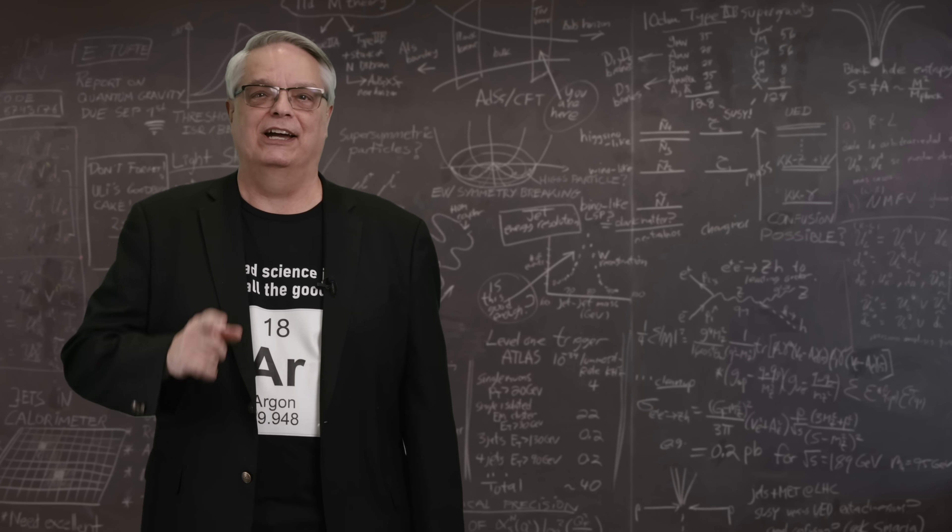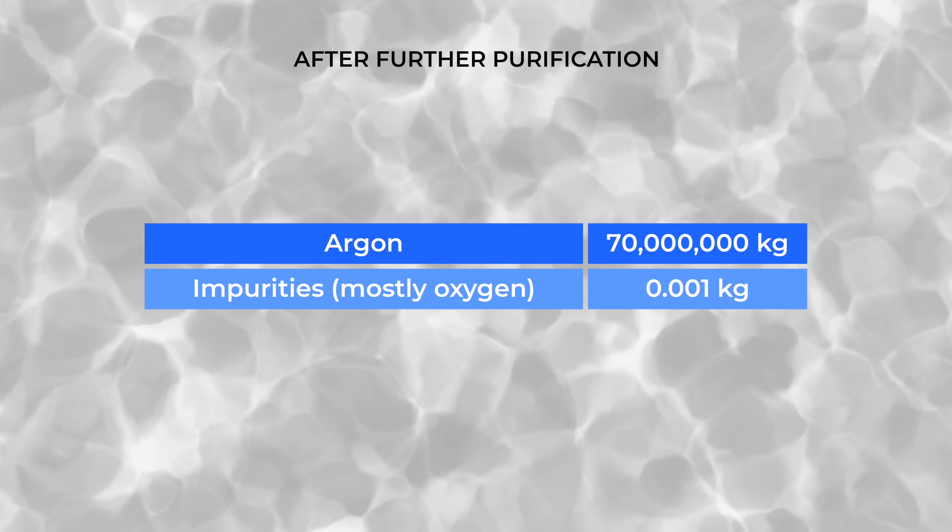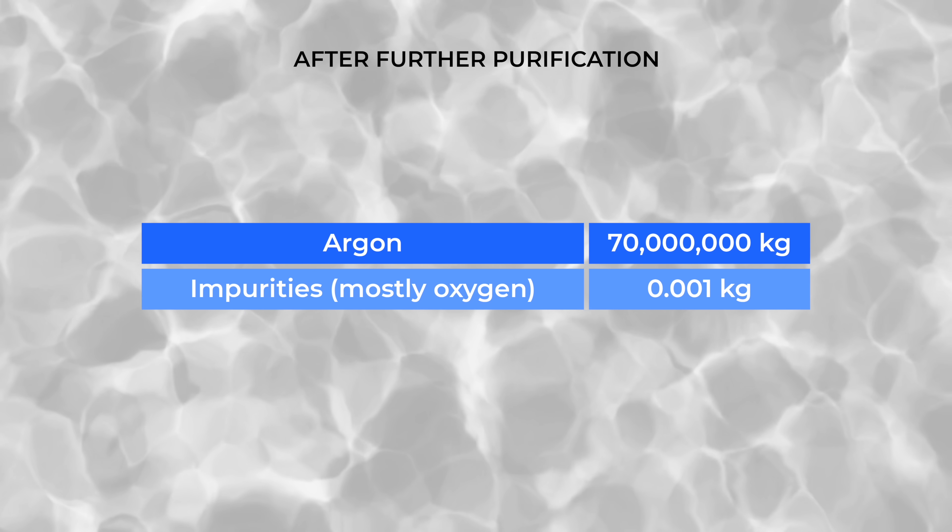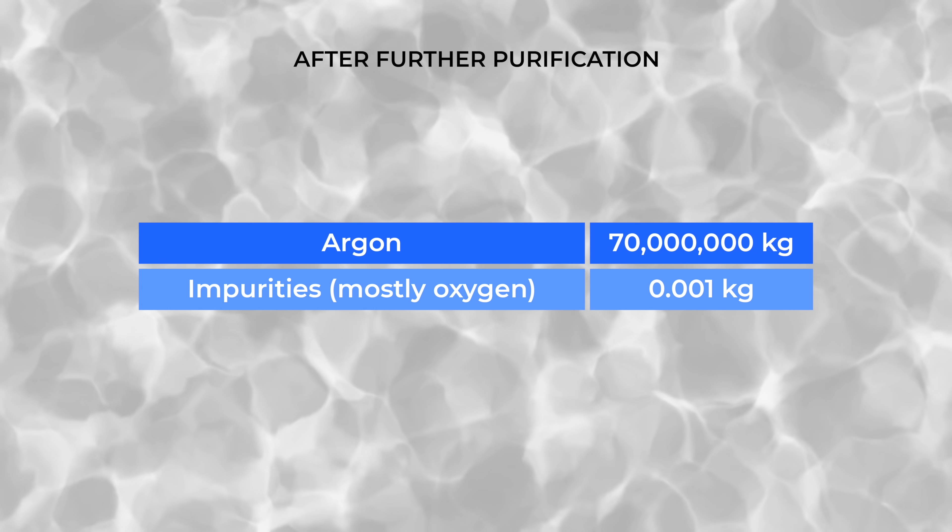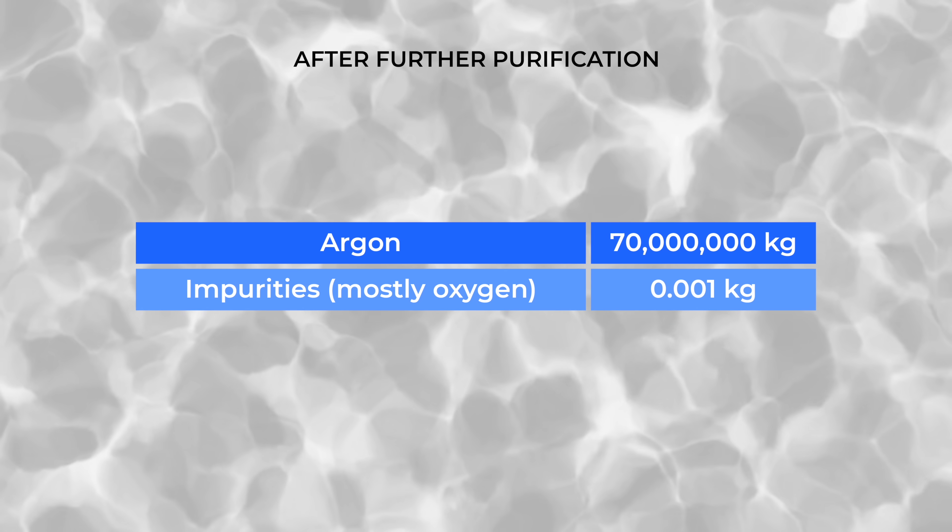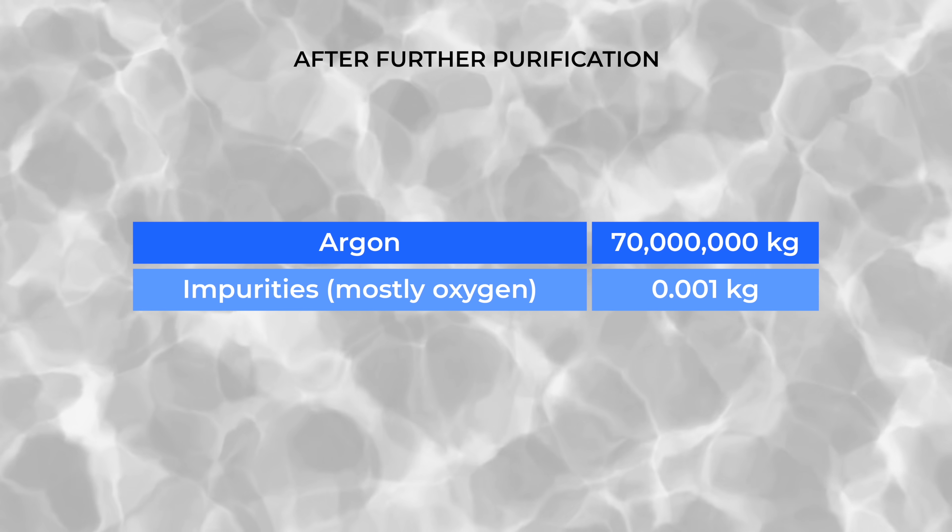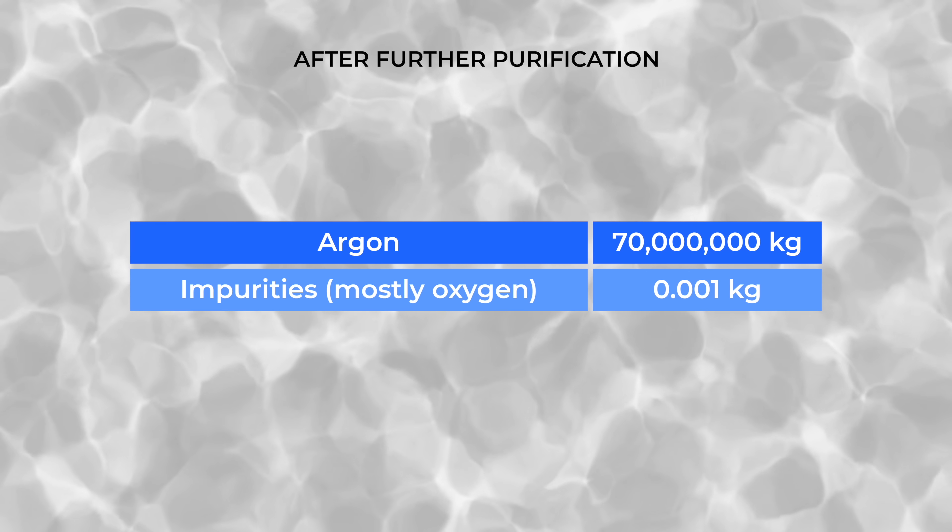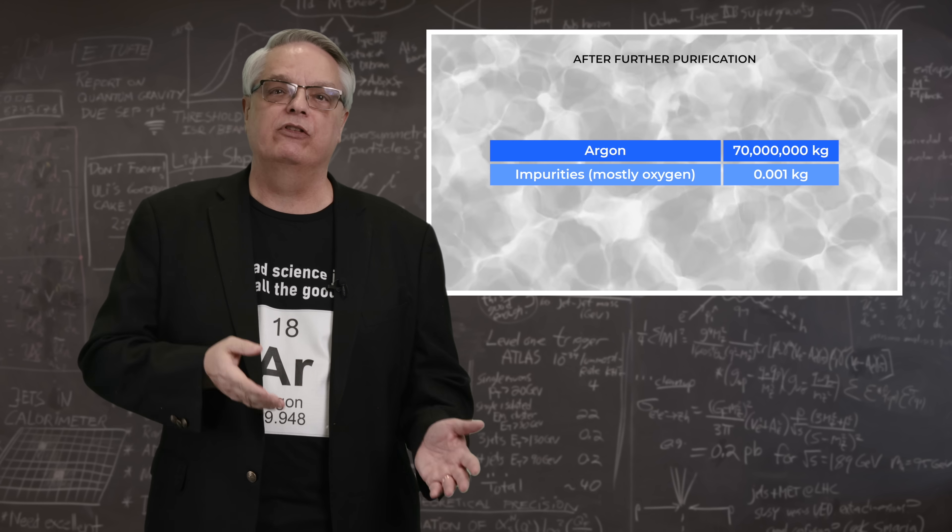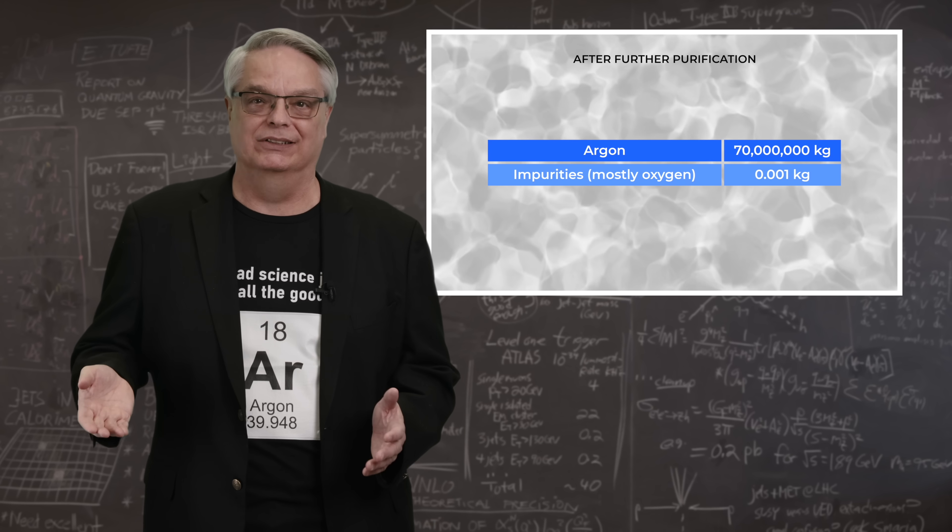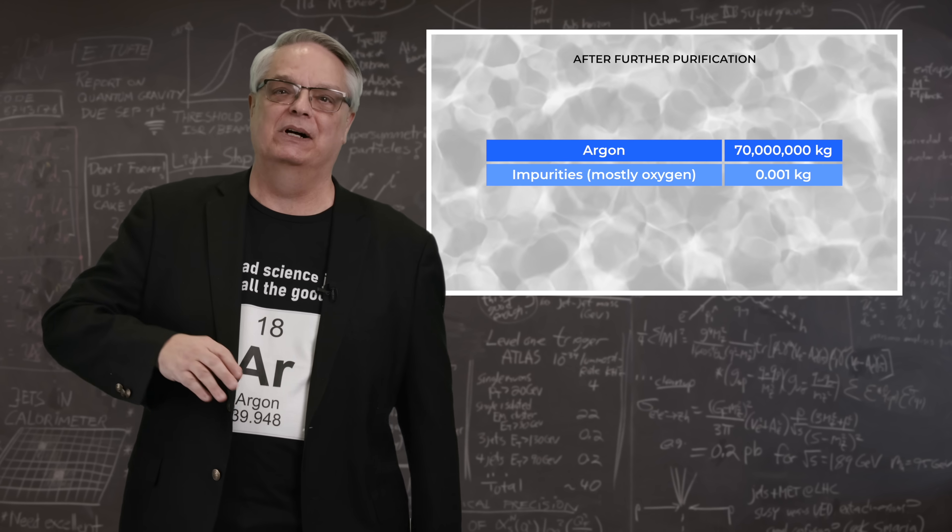Oh, and by the way, fun fact. A purity of 10 parts per trillion means that in the 70,000 tons of argon, which is 70 million kilograms, there's about a single gram of impurities. That's a single paper clip's worth of mass in a volume containing 70,000 tons. That's just crazy when you think about it.